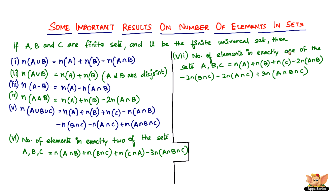The next result is for finding the number of elements in exactly one of the sets A, B, and C. Use this: N of A plus N of B plus N of C minus 2·N of A intersection B minus 2·N of A intersection C minus 2·N of B intersection C plus 3·N of A intersection B intersection C.